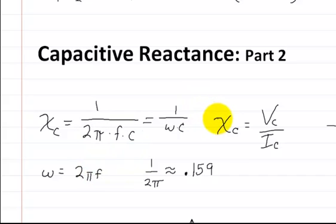Over here you could also get the capacitive reactance by dividing the voltage of the capacitor by the current of the capacitor. And I went to the liberty of dividing 1 by 2 pi, you're going to get about 0.159. And I just do this so I don't have to rewrite 1 over 2 pi.